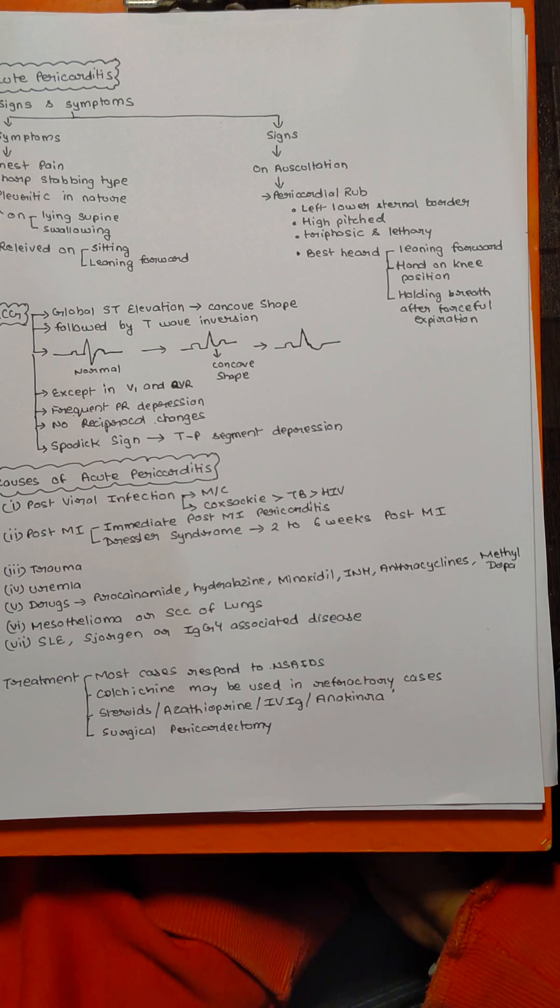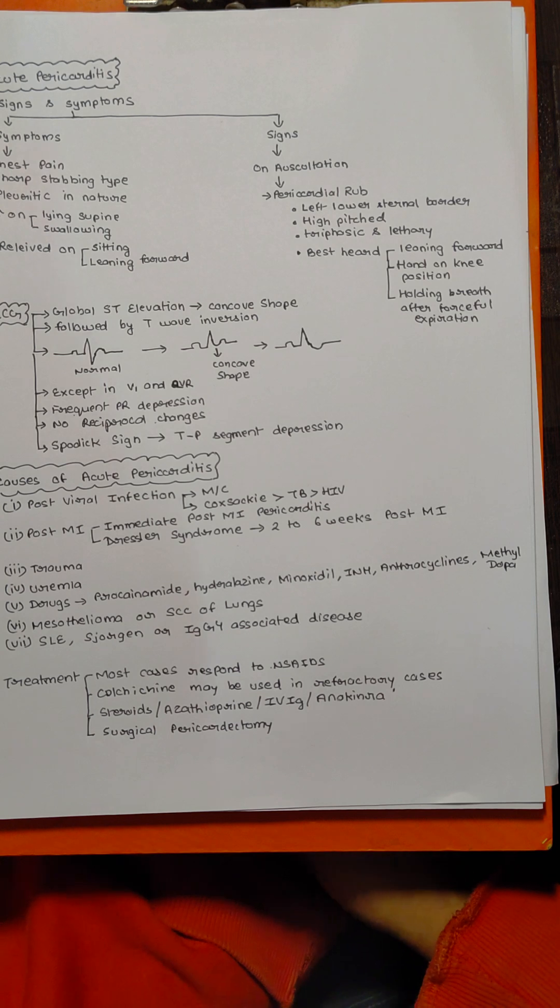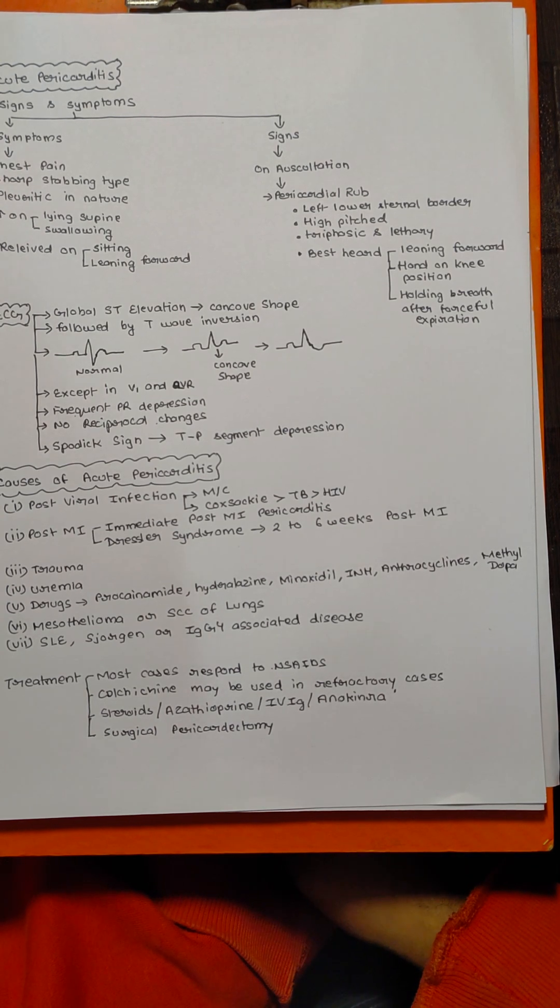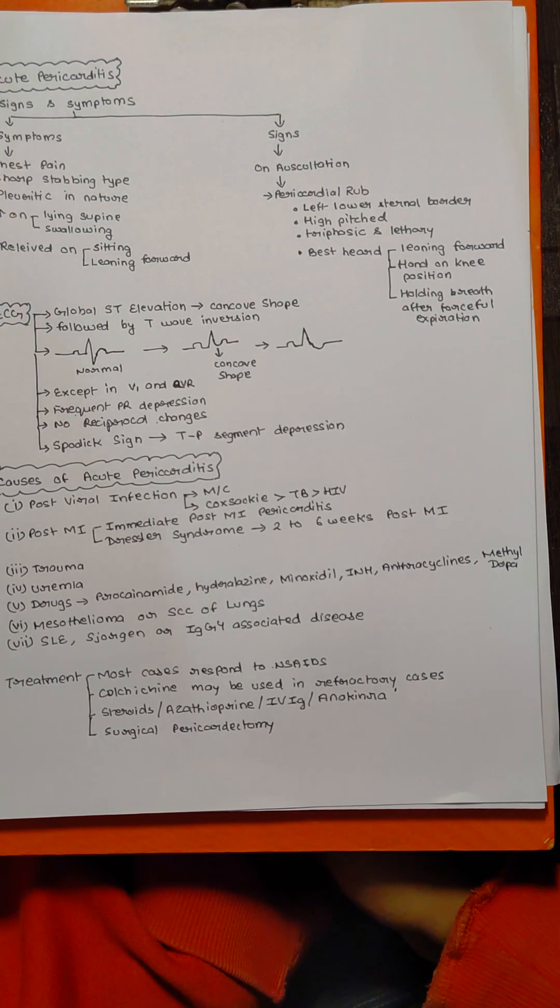Other things that can be used: steroids are used in very selective cases, azathioprine, IVIG, or anakinra. Anakinra is basically anti-interleukin-1. Surgical pericardectomy for acute pericarditis is done very rarely, but it is always an option if we suspect that the patient may develop chronic constrictive pericarditis.